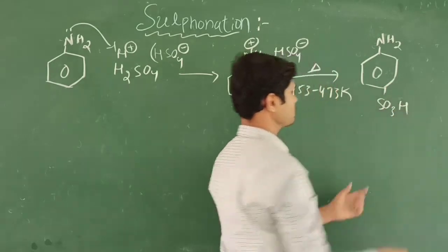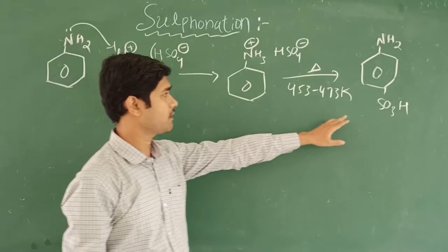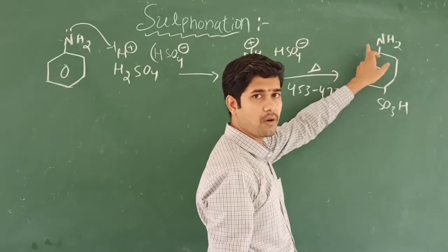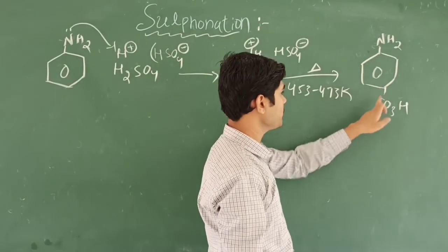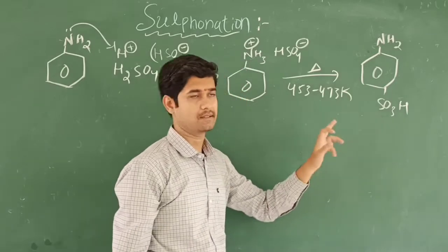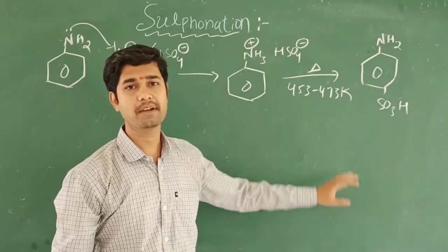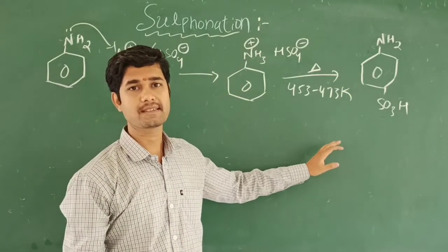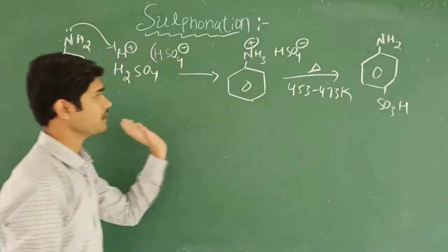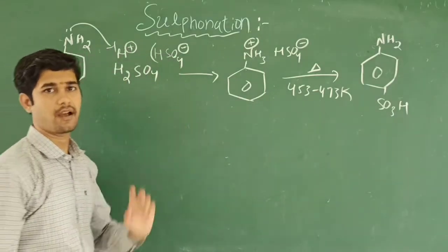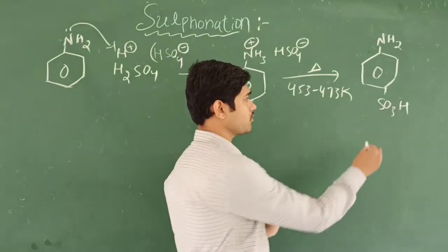This is the final product of sulfonation. Its name is para-aminobenzene sulfonic acid — or simply sulfanilic acid. This is the reaction, and here you know that one part is acidic and the other part is basic.